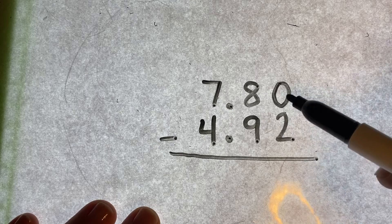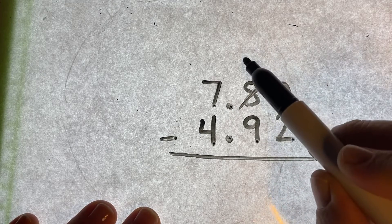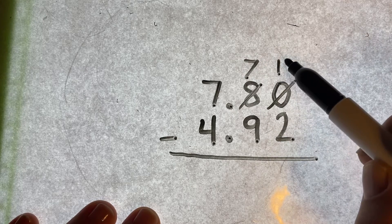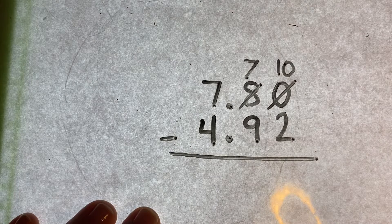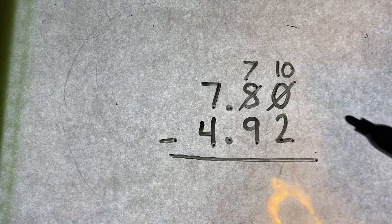I can't take two from nothing, so I borrow from the eight. This becomes a seven, and my zero becomes a ten. Okay, ten, take two away, I have eight.